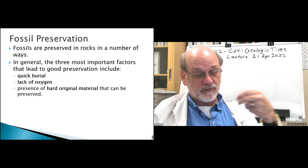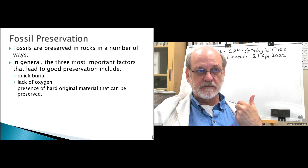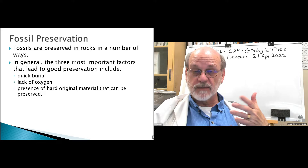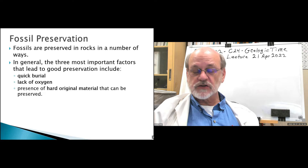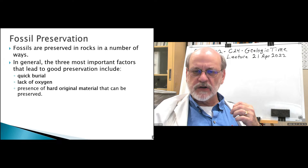Most fossils we have were derived from hard materials like bone, shells, and chitinous material — such as the hard shells from lobsters, crawfish, and in ancient times trilobites. These hard materials make preservation much more likely, at least preservation of the form of the fossil.